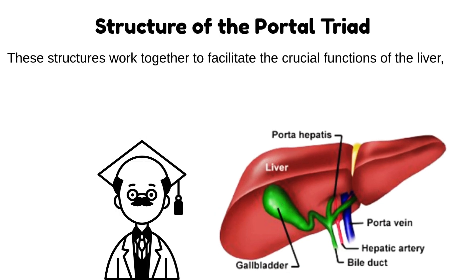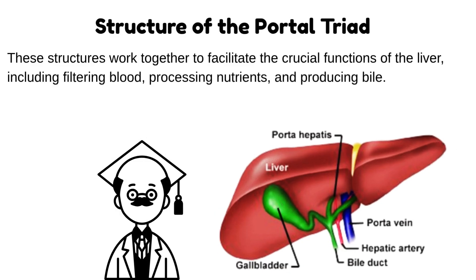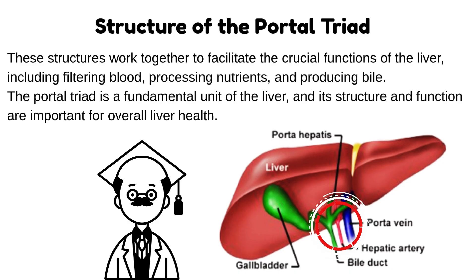These structures work together to facilitate the crucial functions of the liver, including filtering blood, processing nutrients, and producing bile. The portal triad is a fundamental unit of the liver.